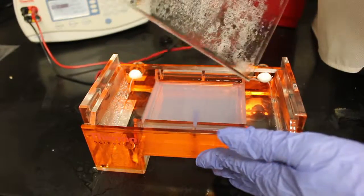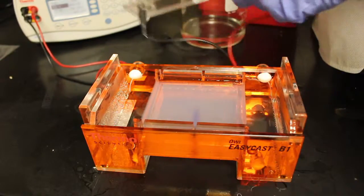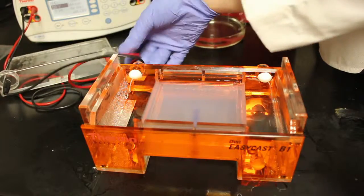Carefully remove the power source from the chamber and ensure that it is no longer outputting electricity. Carefully remove the gel with its mold.